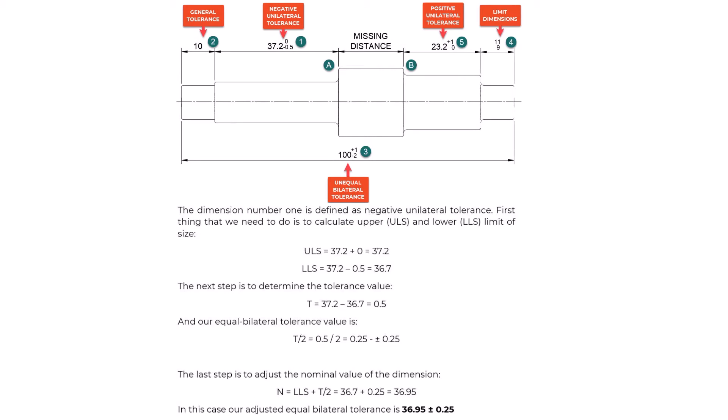Conversion of Negative Unilateral Tolerance to Equal Bilateral Tolerance. Dimension number one is defined as a negative unilateral tolerance. First, we calculate the upper limit of size (ULS) and lower limit of size (LLS). ULS = 37.2 + 0 = 37.2. LLS = 37.2 − 0.5 = 36.7. The tolerance value T = 37.2 − 36.7 = 0.5, so the equal bilateral tolerance is T/2 = 0.5/2 = ±0.25 mm. The adjusted nominal value N = LLS + T/2 = 36.7 + 0.25 = 36.95. Our adjusted equal bilateral tolerance is 36.95 ± 0.25 millimeters.